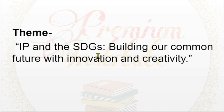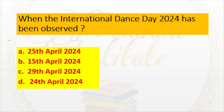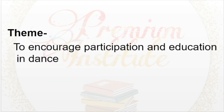When has the International Dance Day 2024 been observed? a. 25th April 2024, b. 15th April 2024, c. 29th April 2024, d. 24th April 2024. Answer: 29th April 2024. Theme: To encourage participation and education in dance.